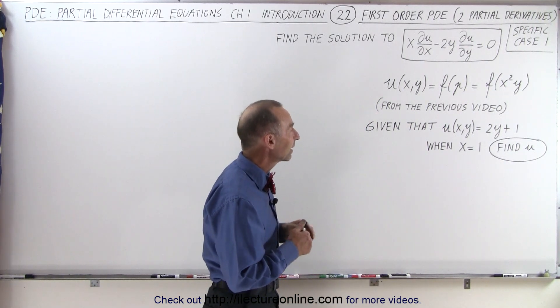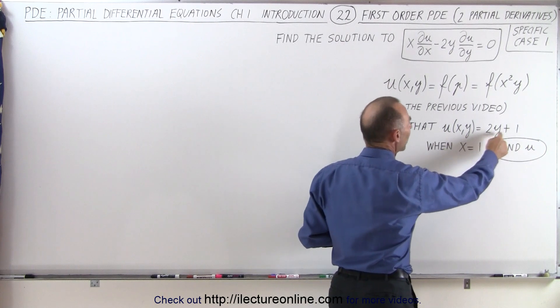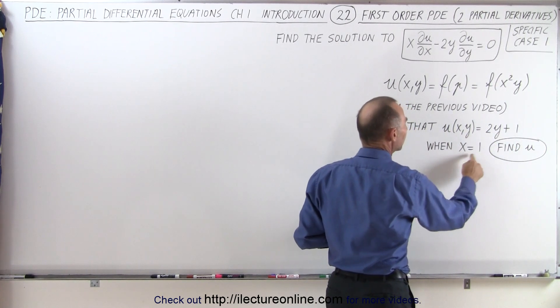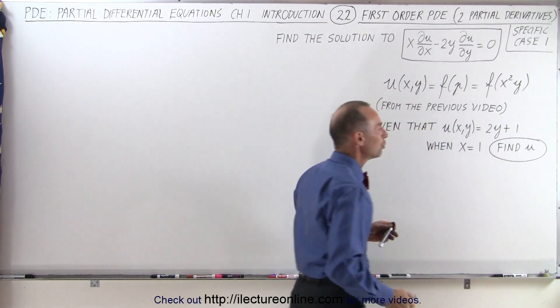Now if we're given that u is equal to 2y plus 1 in the case when x is equal to 1, find u.